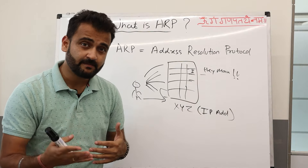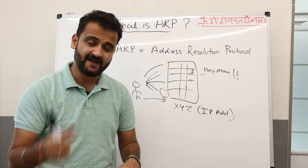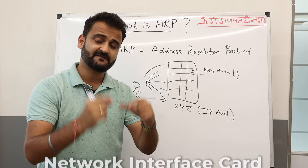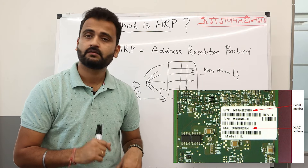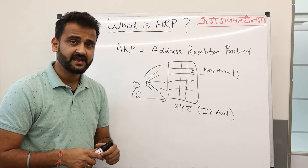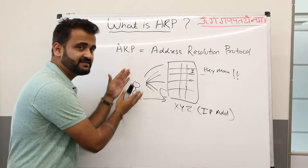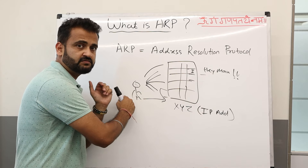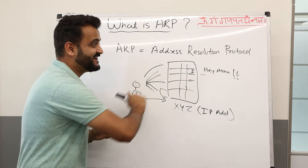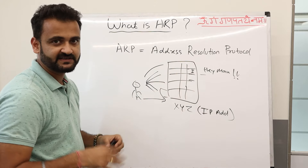A MAC address is the physical address baked into every machine. Every laptop has a network interface card (NIC) which defines the MAC address of that particular laptop. ARP does the same thing, and now we'll understand how ARP works in a very simple request and response model — just like John shouted Mohan's name and Mohan responded.